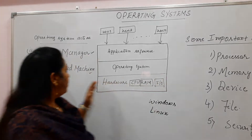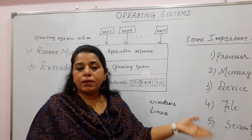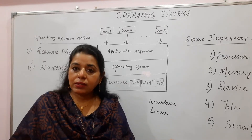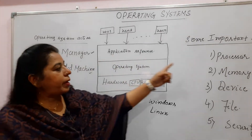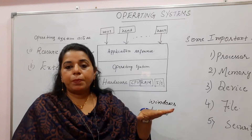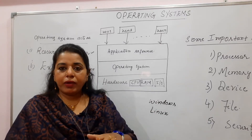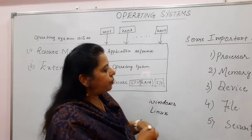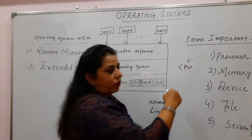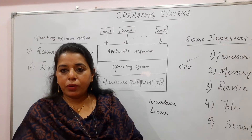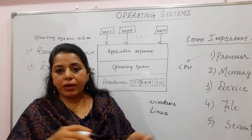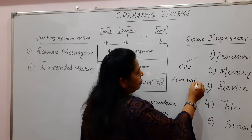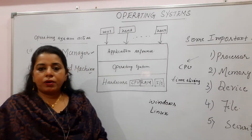If you have to describe the operating system acting as a resource manager, these are the resources — processor, memory, and input-output devices. The operating system acts as a manager by trying to allocate these resources to users. Suppose in a system there is one single processor but multiple users trying to use it — then it is the job of the operating system to allocate this processor. The CPU will be allocated to user 1 for some duration, then user 2, then user 3, and then back to user 1. It is like time slicing.